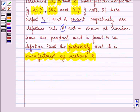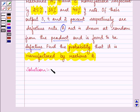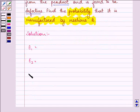So this is a question which involves Bayes' theorem. We are given, first of all, four events: event E1, event E2, event E3, and event A.